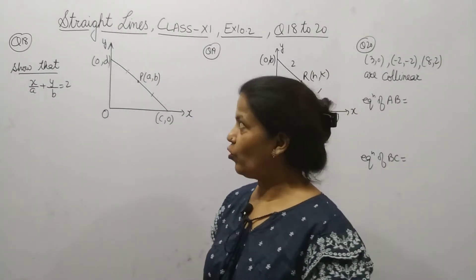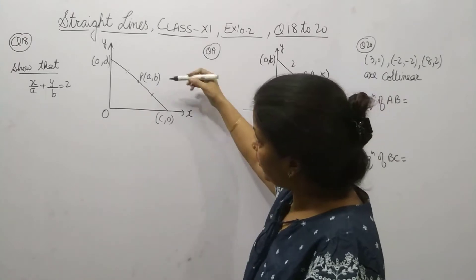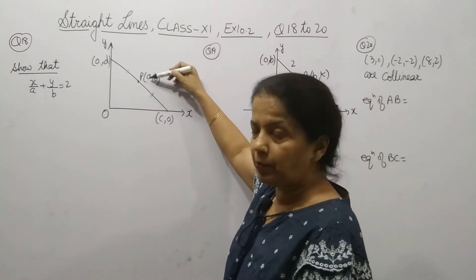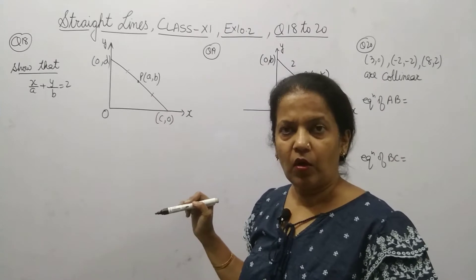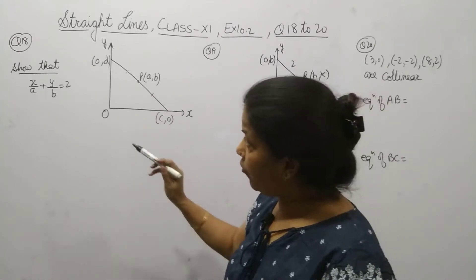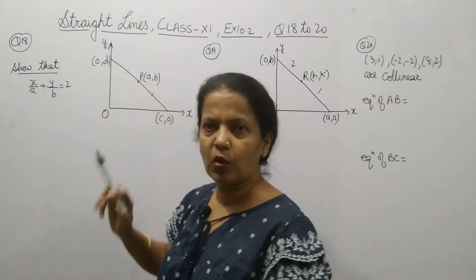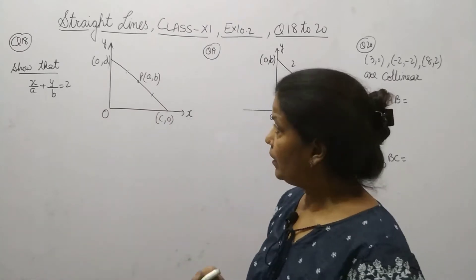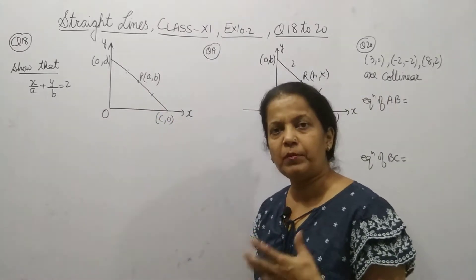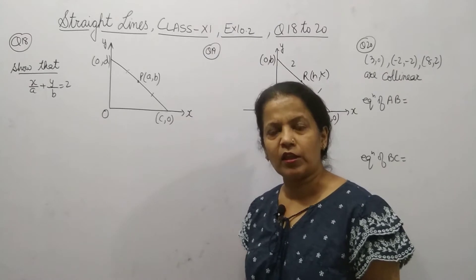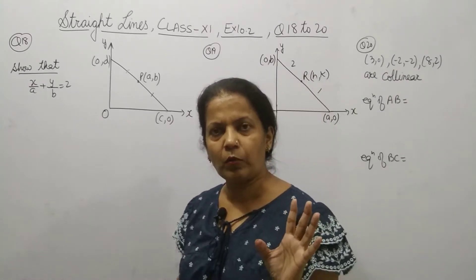Hello everyone. Question number 18. It is given that P is the midpoint of a line between the axes. Now we have to show that x upon a plus y upon b equals 2. Since they are talking about the line between the axes, we can use the intercept formula here.